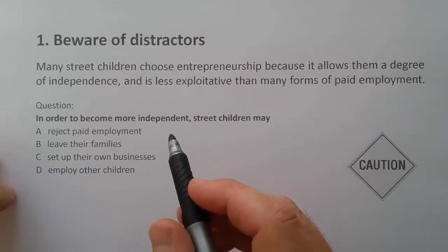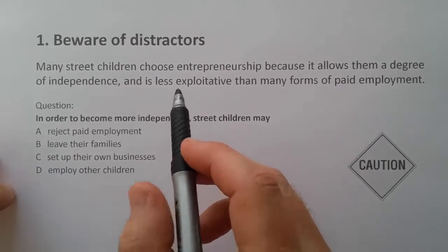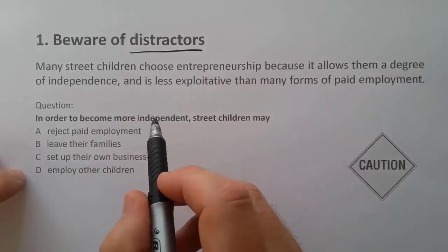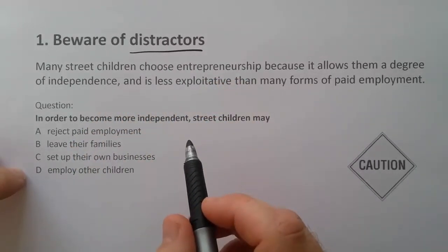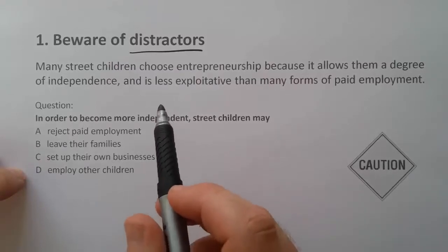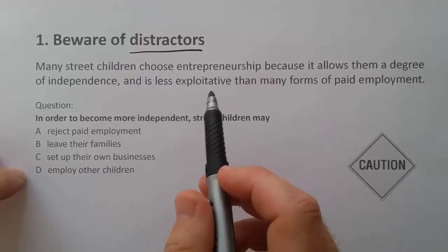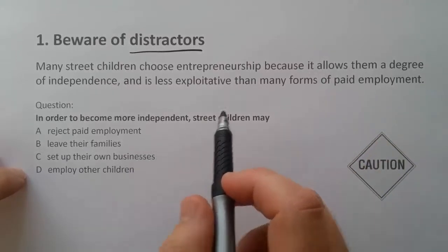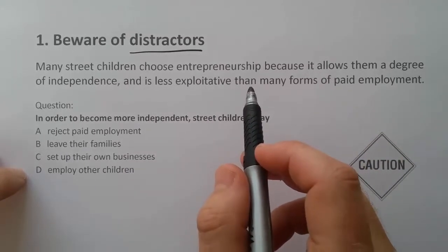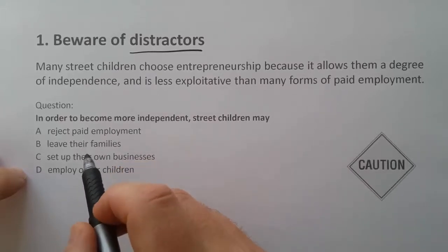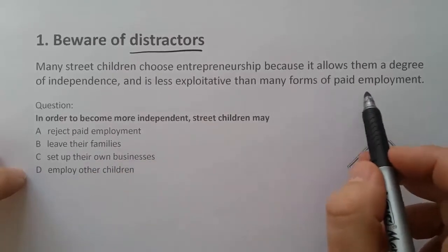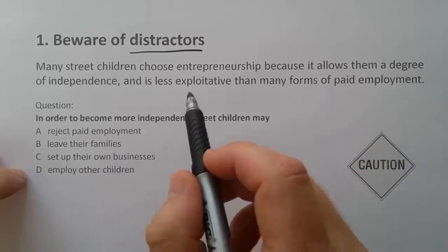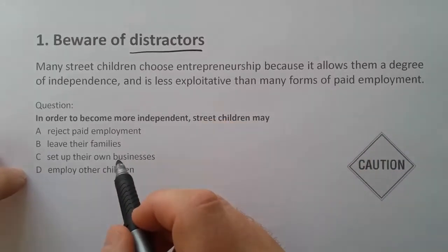In many reading comprehension tests we have this issue of distractors. A distractor is a piece of information which is meant to trick you. The idea is we don't just select information because it happens to be in the text and also in the question. We need to think deeply and make sure we're choosing the right answer based on all of the information, not just because the same information is repeated in the text and the question.